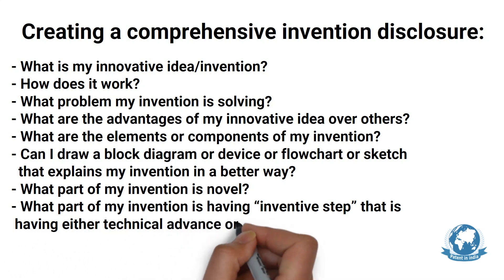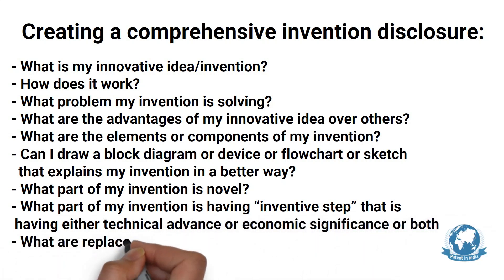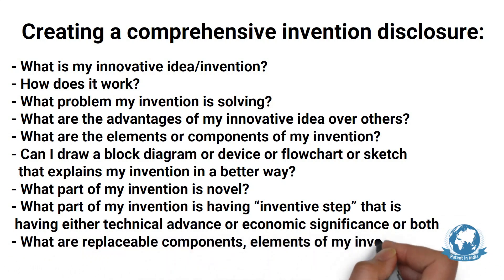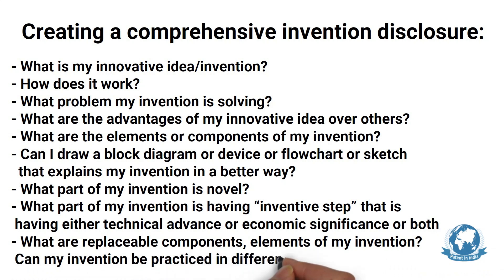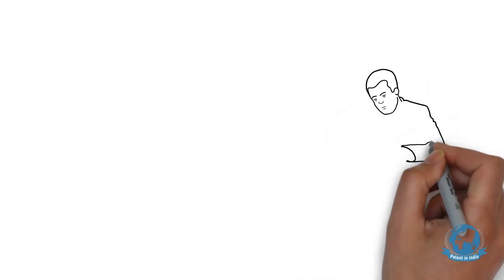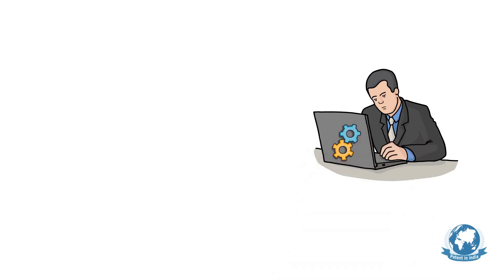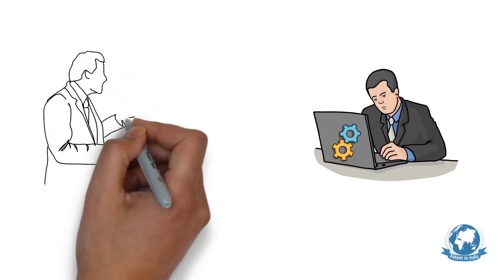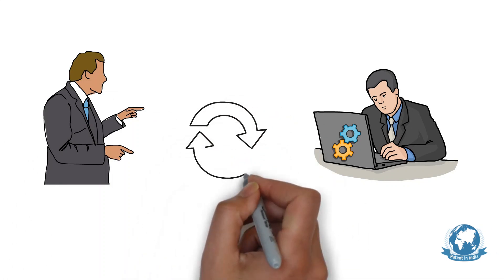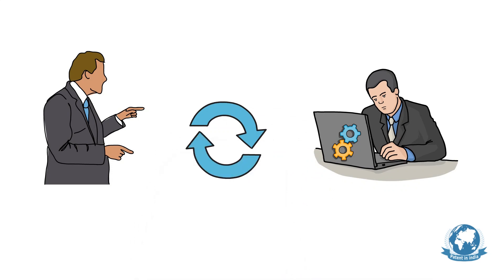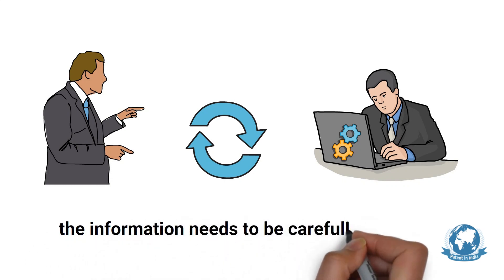Consider whether the inventive step has technical advance, economic significance, or both. What are the replaceable components or elements of my invention? Can my invention be practiced in different ways — does it have any possible embodiments? You may not know answers to all of these questions, but try to write as many answers as you can to come up with a complete invention disclosure. If you miss important information about the inventive step, the patent attorney or agent will get back to you and ask for additional details. This is the most important step from the inventor's side in the entire patent process, so the information needs to be carefully submitted.